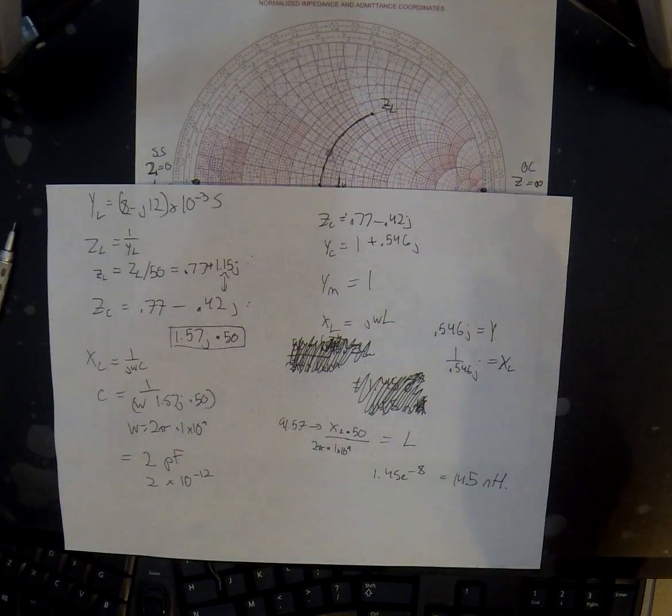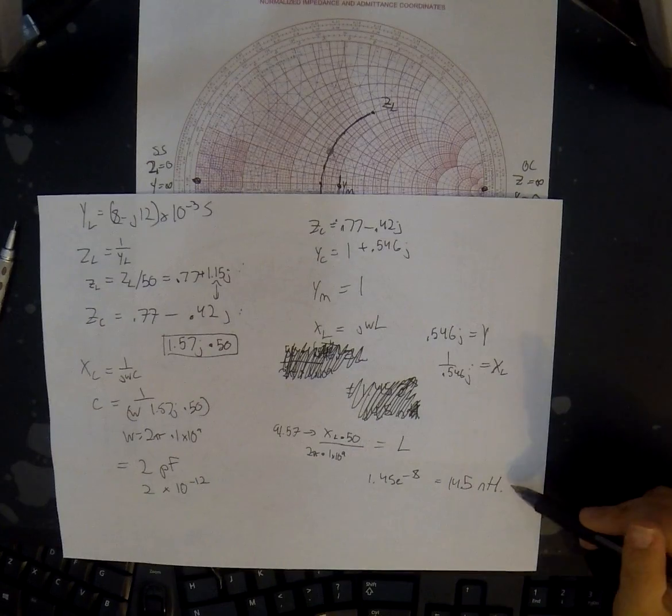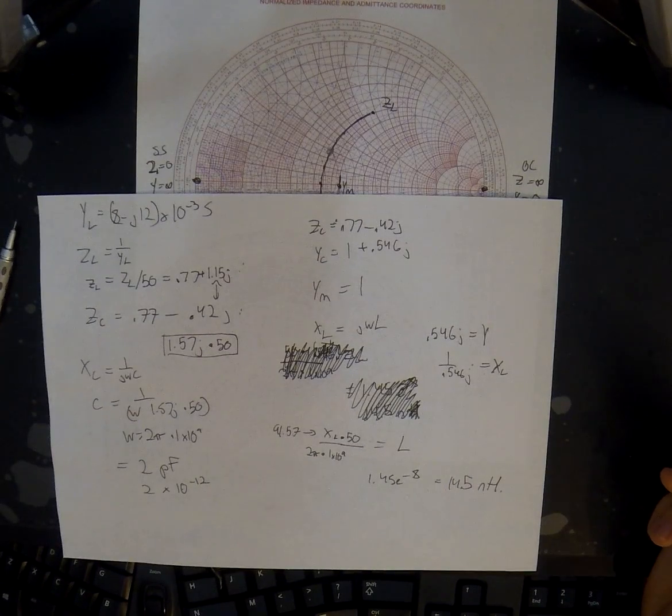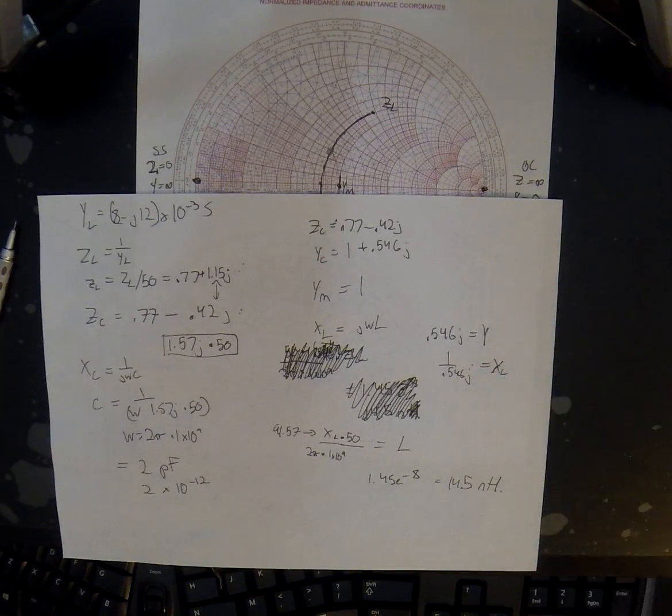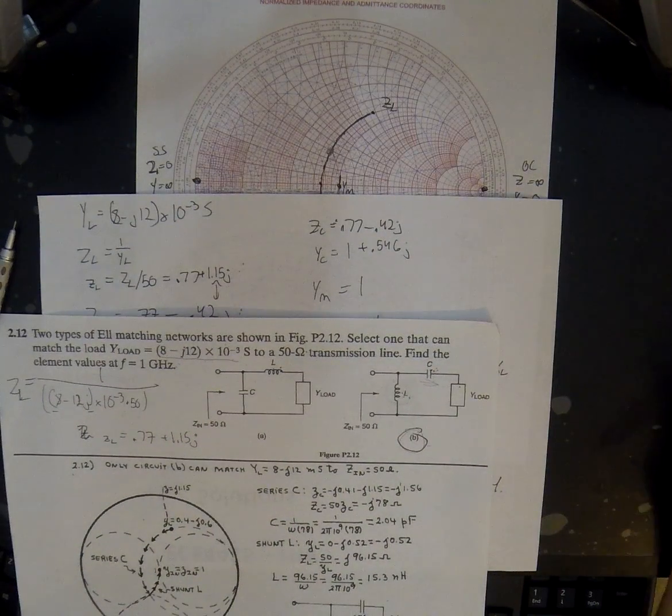And that is correct. So now we have our capacitor, which is 2 picofarads, and our inductor, which is 14.5 nanohenrys for the circuit. So there we go.